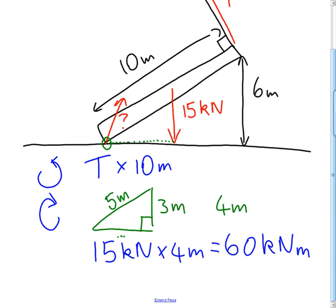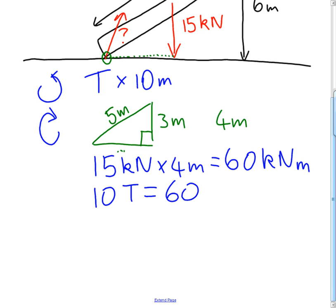Because the beam is in equilibrium, we know the clockwise moment must equal the anti-clockwise moment. Therefore, 10T equals 60, and T equals 6 kilonewtons. So the tension in the cable is 6 kilonewtons.